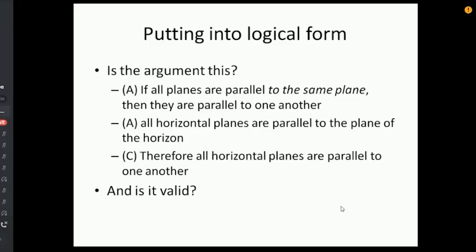So, so far I have reinterpreted Bev's argument in a way that now sort of makes sense. So the argument would be this, if all planes are parallel to the same plane, then they are parallel to one another. All horizontal planes are parallel to the plane of the horizon, so therefore all horizontal planes are parallel to one another. Is that argument valid?